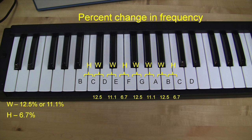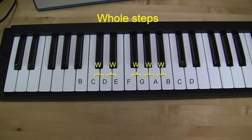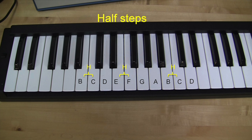If you now calculate the ratios of adjacent frequencies, you will be able to see a pattern. The interval which has a black key in between, also called whole tone, has a change of either 12.5 or 11.1%. Whereas the interval which does not have a black key in between is called half a tone and the interval change is 6.7%. This is about half of the larger interval.